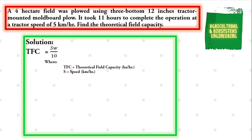We already have the values for all of the terms. What we need is to simply substitute it to the formula. So TFC is equal to the value of speed of 5 kilometers per hour, multiplied by the width of 12 inches.